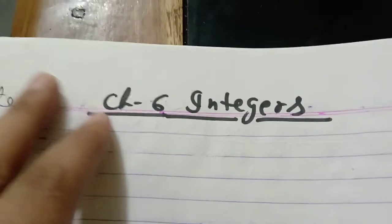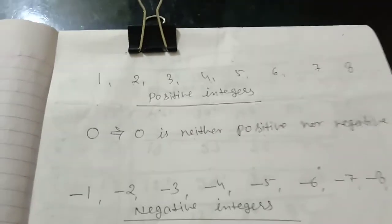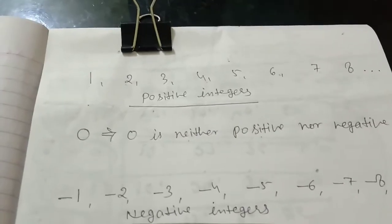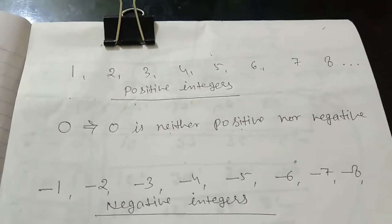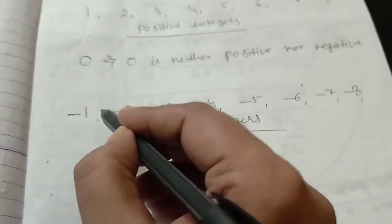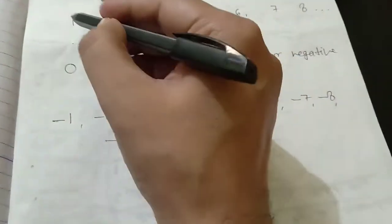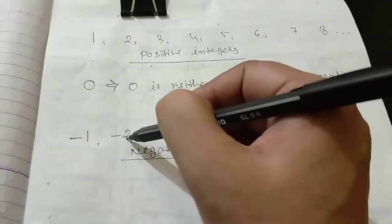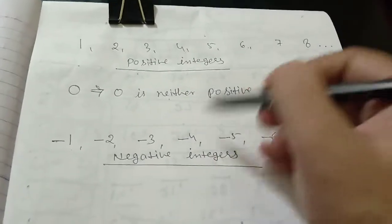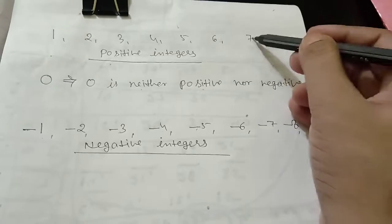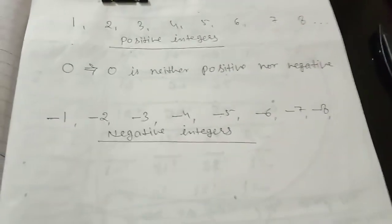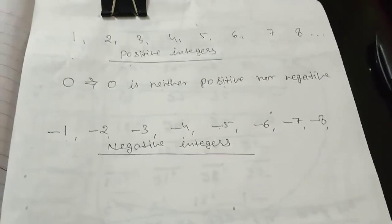To understand what integers are, we have to study these numbers. Every natural number has opposite numbers. Listen again: every natural number has its opposite numbers. These opposite numbers are expressed with the negative sign. This is called the minus symbol or negative sign. So you can see 1, minus 1, 2, minus 2, 3, minus 3, 4, minus 4, 5, minus 5, 6, minus 6, 7, minus 7, 8, minus 8, and so on. These numbers are not going to end here.